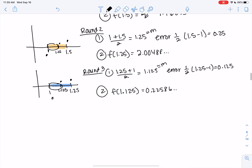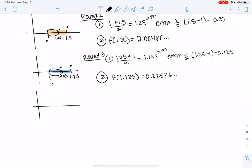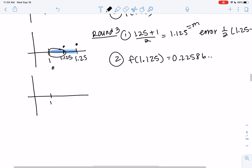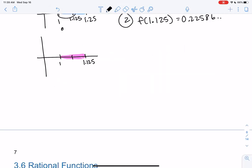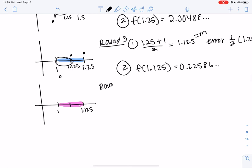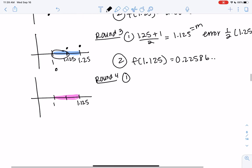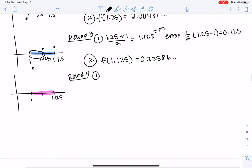So again, we're going to continue with the interval where the sign changes. We'll find the midpoint. This is round four. I think this one took five or six rounds. So we're almost there. Sorry. There we go. The midpoint, we add them up. 1.0625. Error is one half of the interval. And I got 0.0625. So we are almost there.